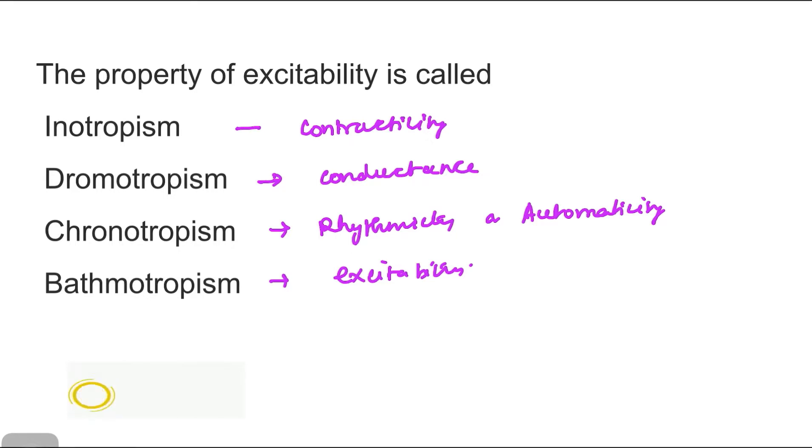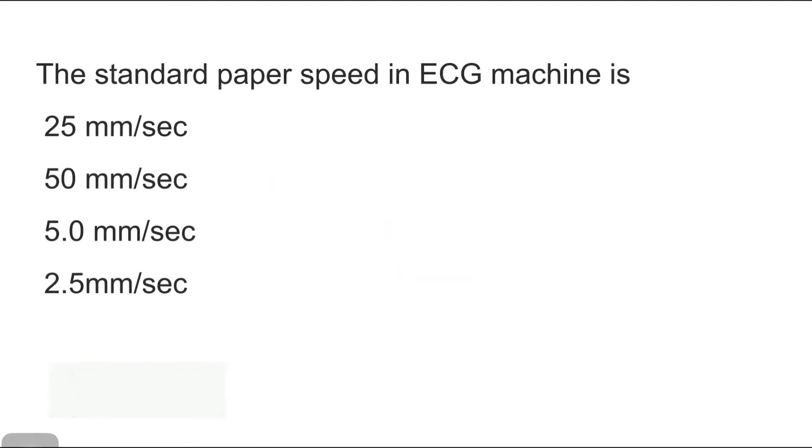So let me just remind you again. Inotropism is contractility. Dromotropism is the conductability or conductance. Chronotropism is rhythmicity or automaticity. And bathmotropism is the excitability. We will go to the next question. The standard paper speed in ECG machine is 25 millimeters per second. This is a very straightforward and simple question.